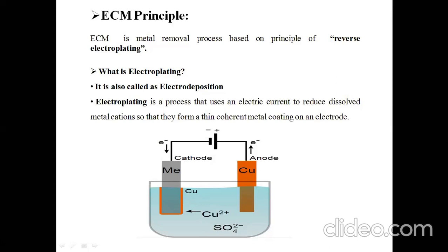The electroplating process is also called the electro-deposition process. Electro-deposition means deposition of one metal over another metal. The definition of electroplating is: electroplating is the process that uses an electric current to reduce dissolved metal cations so that they form a thin coherent metal coating on an electrode. Now you can see this basic figure of electroplating.